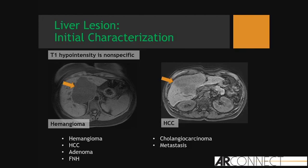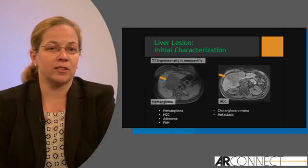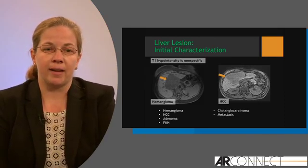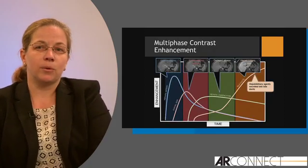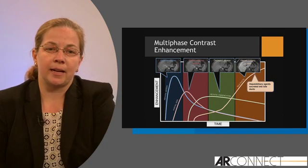So then we switch to our T1-weighted sequences. Can I characterize lesions based on T1 hypointensity alone? No, it's nonspecific. You can have variable T1 hypointensity or marked T1 hypointensity across all characterizations of lesions, be they benign or malignant. So we can't rely on T2 or T1 to help us for lesion characterization.